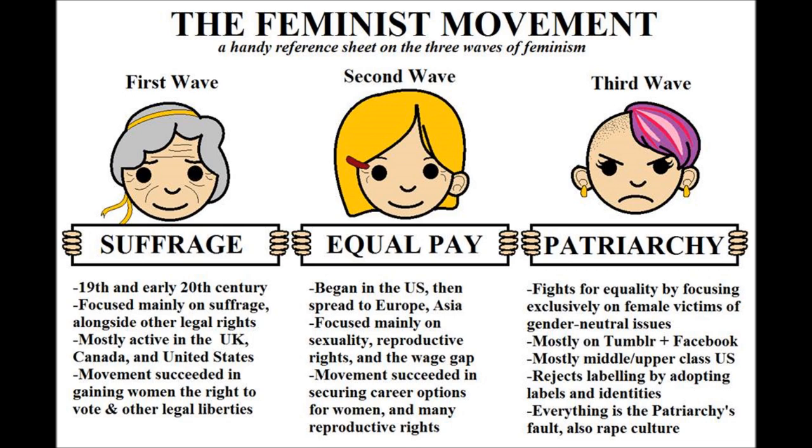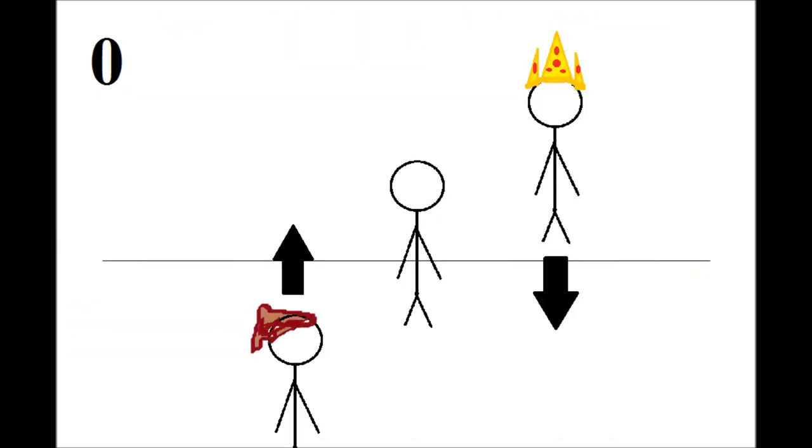For example, some claim that the argument of feminism contained in its premises the seeds of its overall development over time. For all intents and purposes, it began with the enlightenment proposition that all men are equal and are endowed before the law with unalienable rights to life, liberty, property, etc.